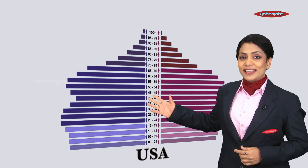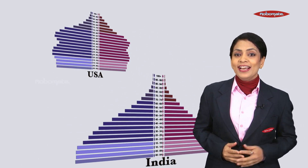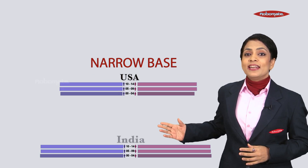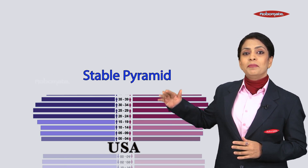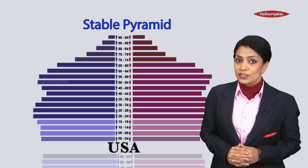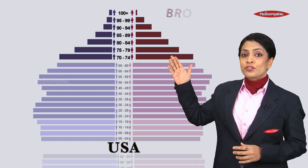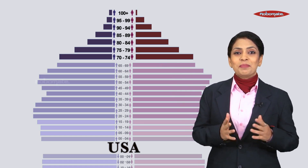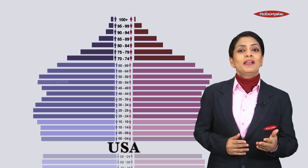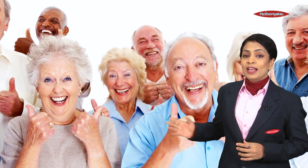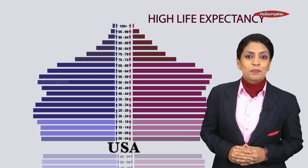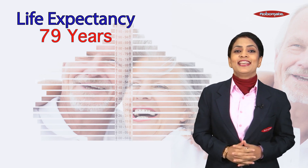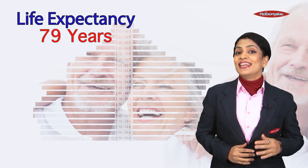Compared to India, the USA's population pyramid has a narrow base, indicating a low birth rate. The bar lines have remained stable as it moves upwards towards the top. The size of the top is broad, meaning more people are living in the older age group, signifying high life expectancy for the senior population. The average life expectancy in the USA is 79 years. The USA is a developed country.